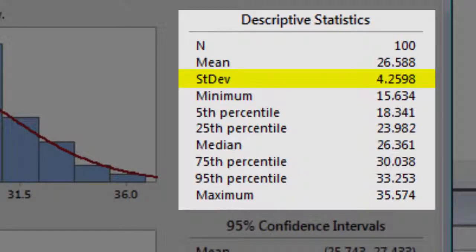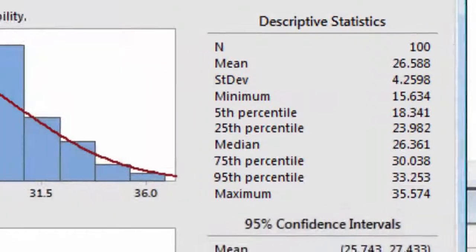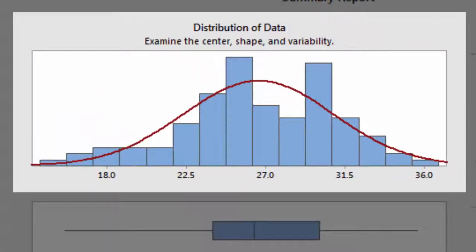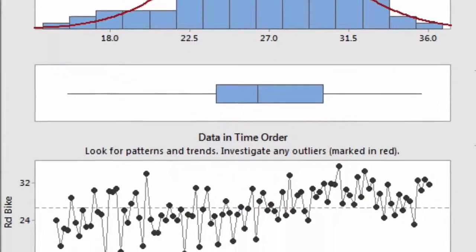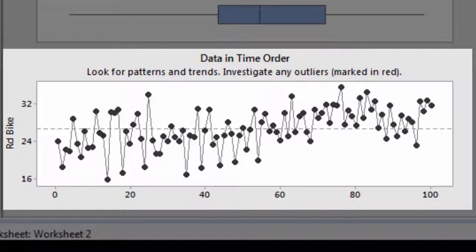That means there's a lot of variation from day to day. The graph of the distribution of the data bears this out, showing that his commutes have ranged from under 18 minutes to about 36 minutes. The graph of data in time order suggests that Joel's commute has gotten longer over the past several weeks, too.